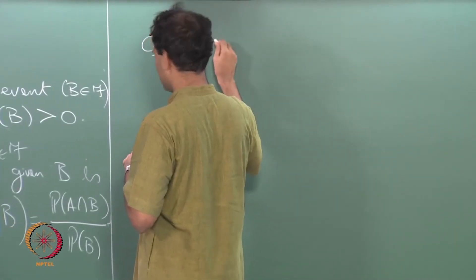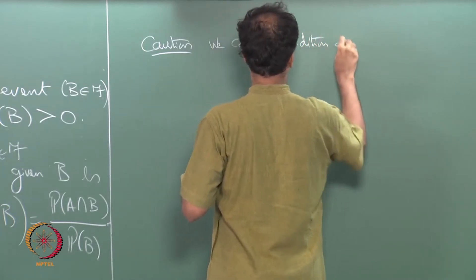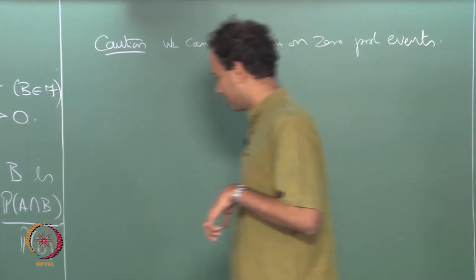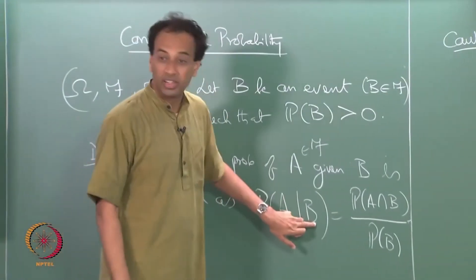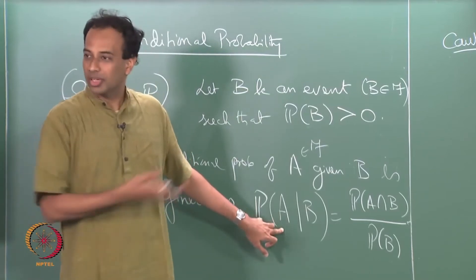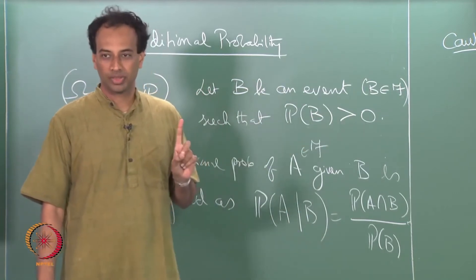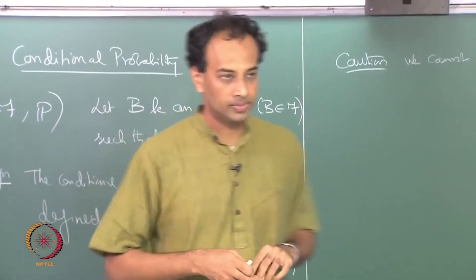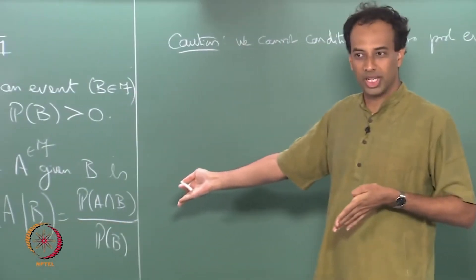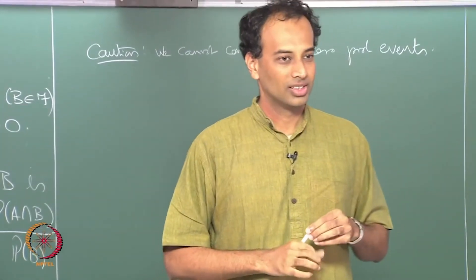We cannot condition on zero-probability events. What I am saying is the event to the right of this vertical bar must have non-zero probability. So A can be any F-measurable set, but what is on the right side of this vertical line must be a non-zero probability event. It is very easy to see why you need it — otherwise the denominator being 0 is meaningless. But very often you can get into trouble with this and miss out on this constraint.